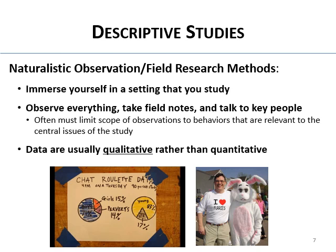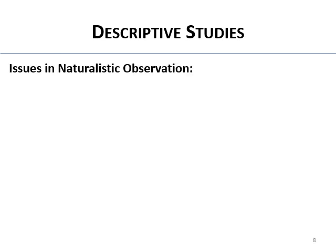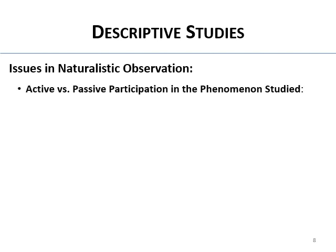The data are usually qualitative — you're coming up with themes of things you see rather than getting means. Chat Roulette, where you could go online and randomly meet someone with a webcam, is an example where doing a descriptive study would be quite interesting in terms of what was going on.